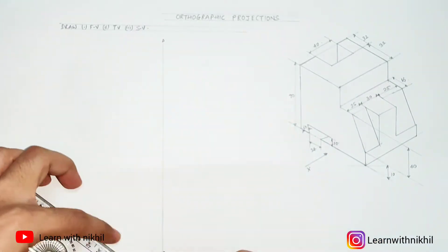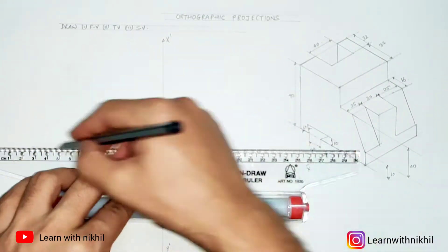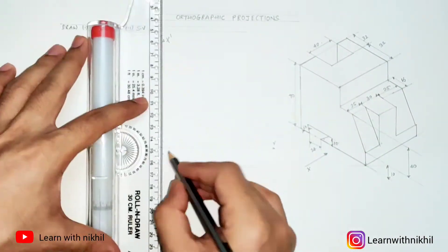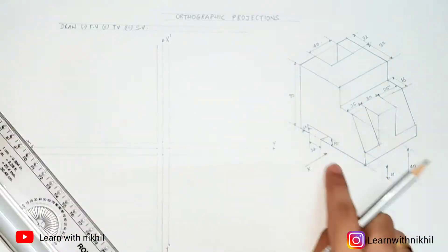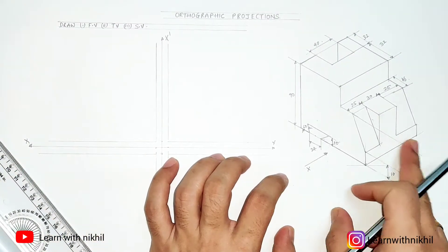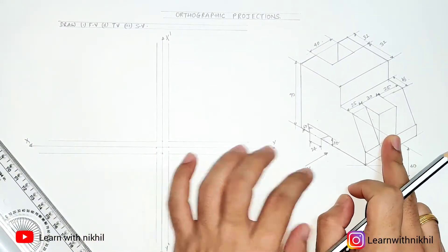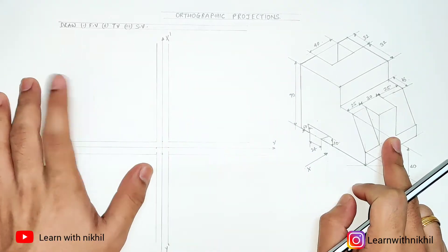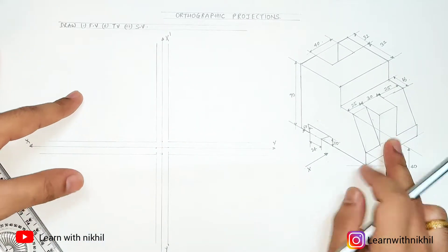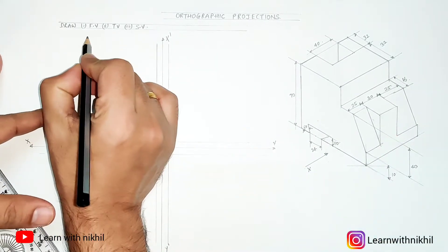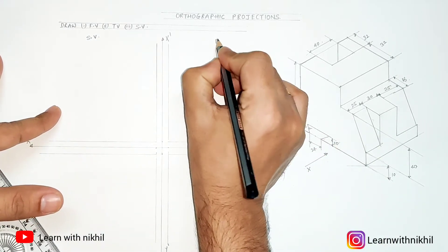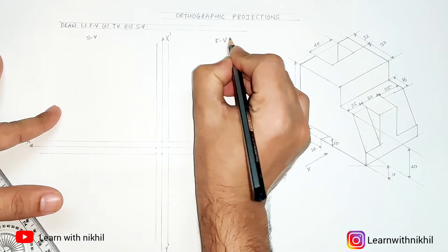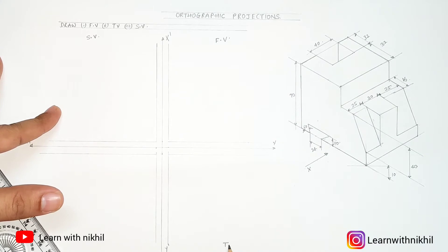For the first step, always look for the arrow X and draw the coordinates. From this side is the side view — the side view will be on the left-hand side. Looking from the right, the side view will be on the left side, the front view will be on the opposite side, and the top view will always be at the bottom side.